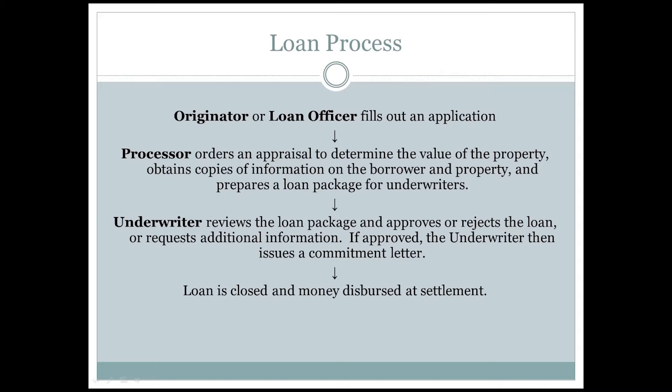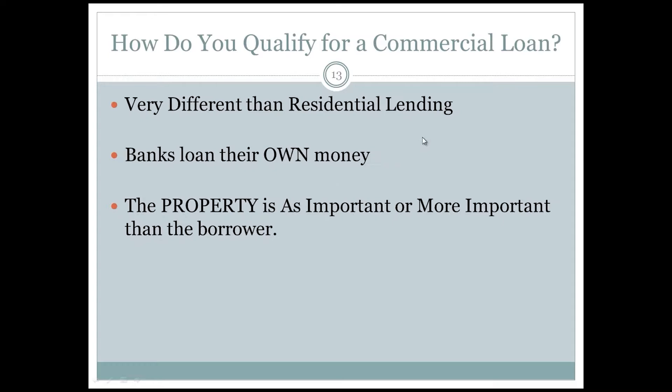If the lender is a mortgage company, the processor may actually shop the loan to several direct lenders in order to find the best loan terms for the borrower. Finally, the underwriter is the decision maker in the loan process. In some lending institutions such as community banks, the underwriter might actually be a committee that decides on the loan's approval or denial.